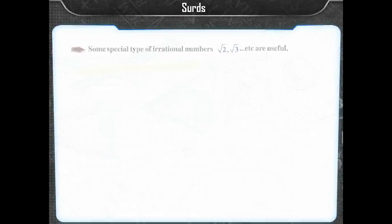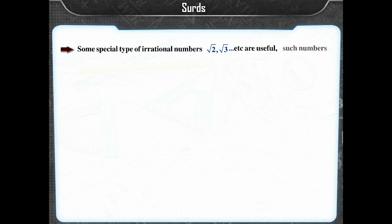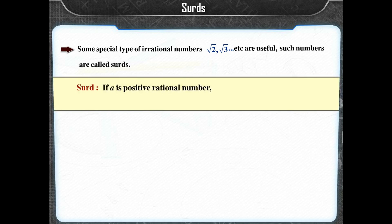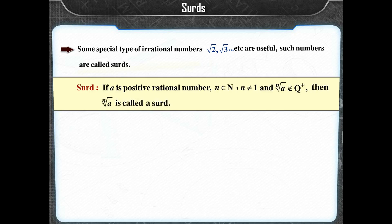SIRDS. Some special types of irrational numbers — square root of 2, square root of 3, etc. — are useful. Such numbers are called SIRDS. If A is a positive rational number, n belongs to N, n does not equal 1, and the nth root of A does not belong to the set of positive rational numbers, then the nth root of A is called a SIRD.